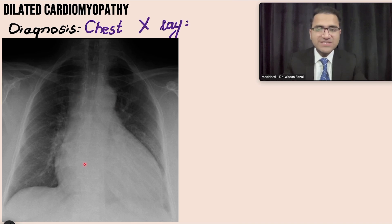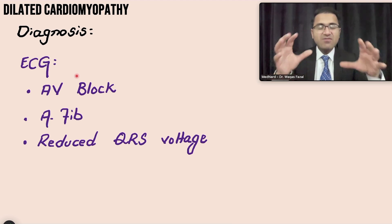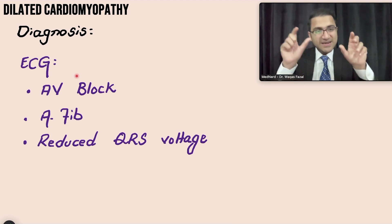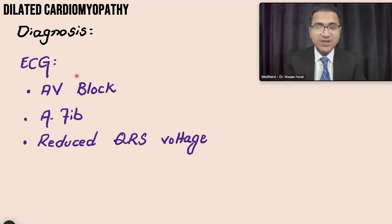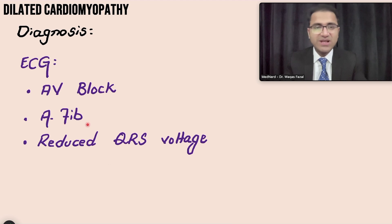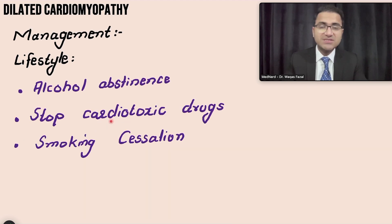On chest X-ray you would see a dilated heart. These patients have excess myocardium that disturbs the normal flow of electrical currents, which can result in AV block, atrial fibrillation, and reduced QRS voltages on ECG — these are non-specific findings seen in dilated cardiomyopathy.